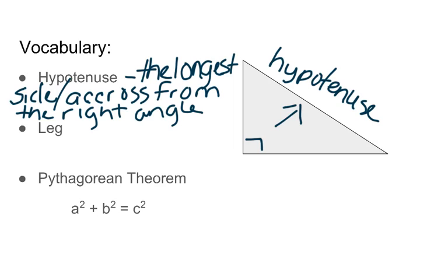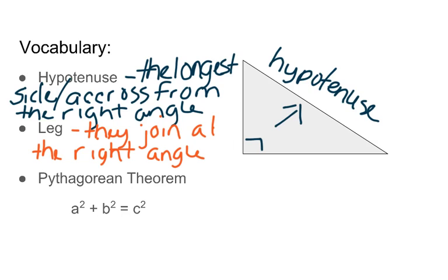Our next word is leg, and there are always two of them in a right triangle. They join at the right angle. And we usually call these A and B, and we call the hypotenuse C.